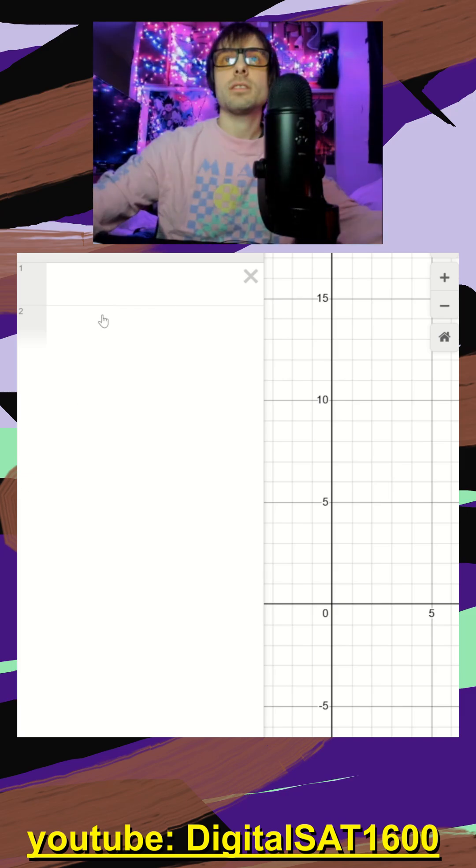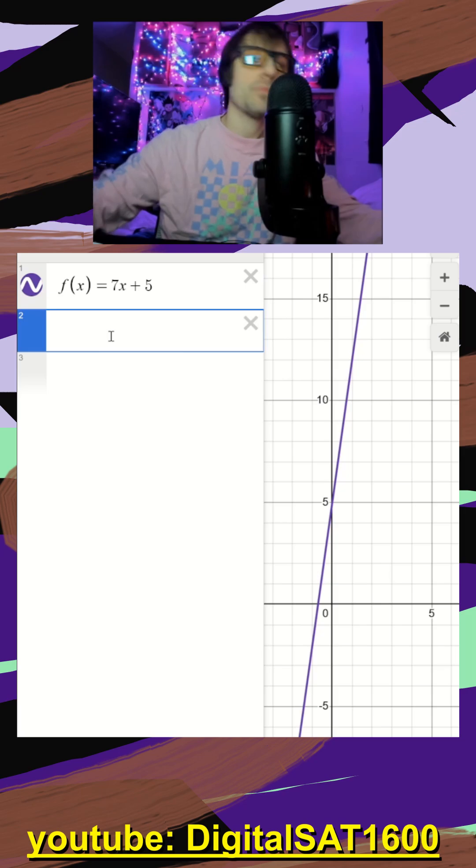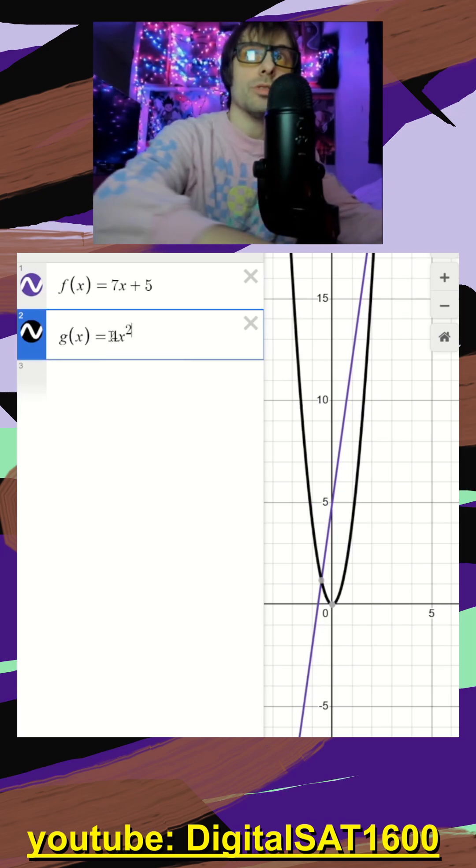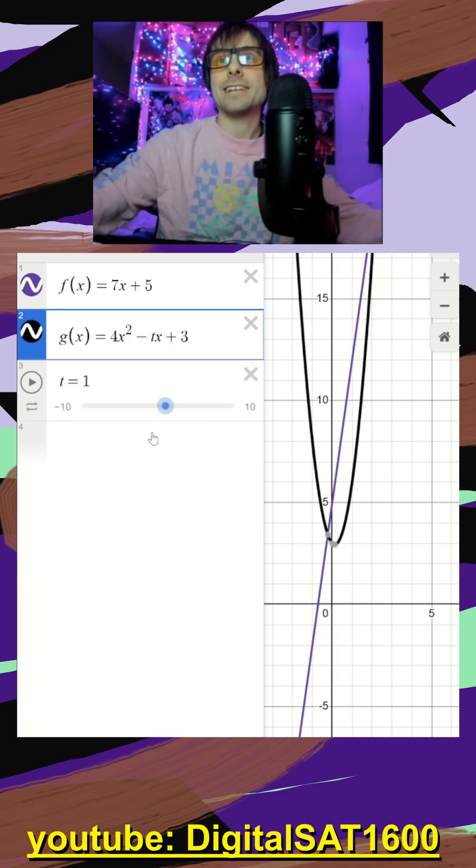I'm jumping straight to Desmos, and I'm going to start with typing my three functions. So we have f of x is equal to that. We have g of x is going to be equal to 4x squared minus our tx plus 3. Add a slider.